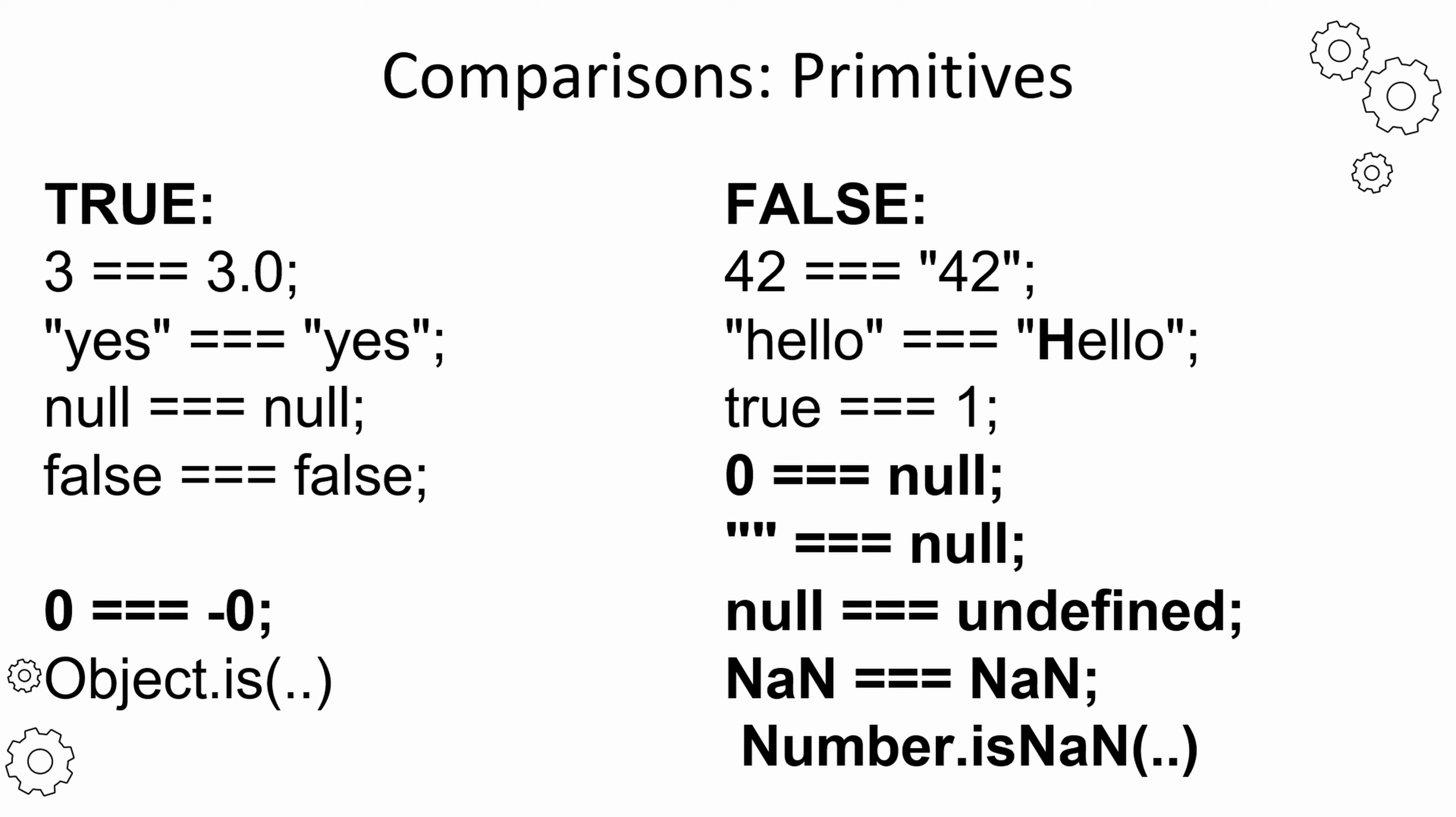The number 42 does not equal the string 42. NaN, which means not a number, does not equal NaN. You need to use Number.isNaN to check if a variable is NaN.